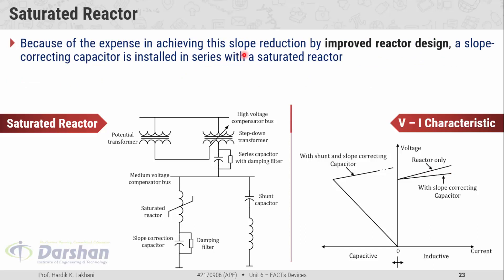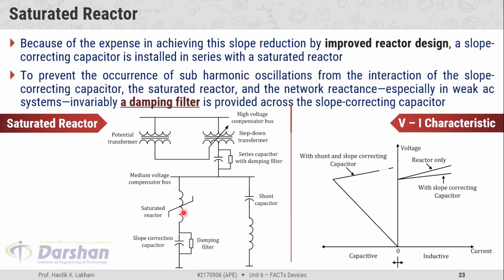Because of the expense in achieving slope reduction by improving the reactor design, a slope correcting capacitor is installed in series with the saturated reactor. Since the saturated reactor is inductive and the capacitor is in series with it, L and C come together creating a possibility of resonance. To prevent sub-harmonic oscillations from the interaction of the slope correcting capacitor, the saturated reactor, and the network reactance — especially in weak AC systems — a damping filter is provided across the slope correcting capacitor.